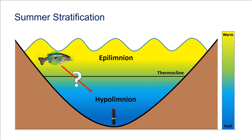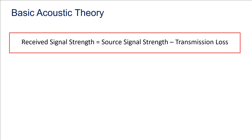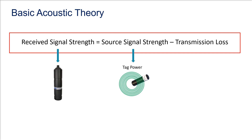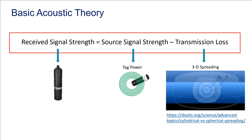Since we know that there can be strong temperature gradients in lakes during summer, what impact can we expect on detection performance? We can start with some basic acoustic theory to develop an understanding of the main physical factors affecting the strength of an acoustic signal arriving at a receiver. In the equation shown here, received signal strength represents the proportion of a transmitted signal that arrives at a receiver. The source signal strength represents the power level of the tag used, and transmission loss represents losses in the strength of the signal as it travels through the water.